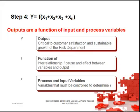Outputs are a function of input and process variables. If Y is your output, it is critical to customer satisfaction and sustainable growth. F is the function, or the interrelationship — cause and effect between variables and outputs. And X's are your process and input variables, so variables that must be controlled to determine Y.